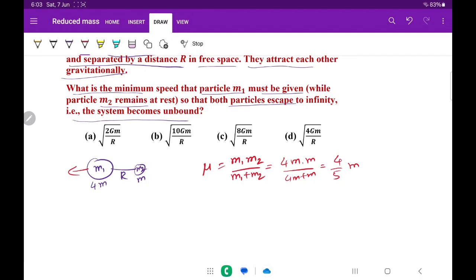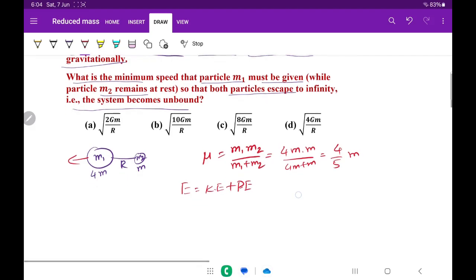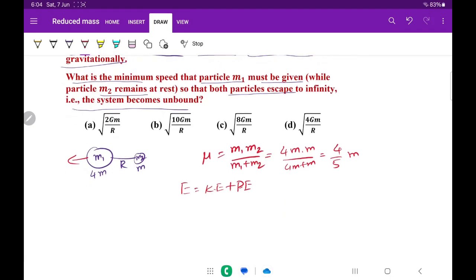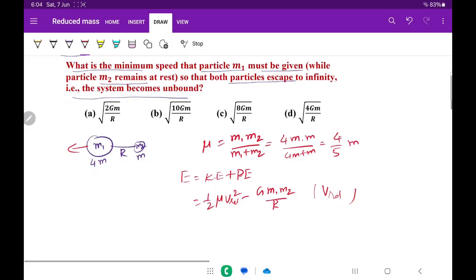What is the total energy of the system? Total energy is kinetic energy plus potential energy, which can be given as half mu v-relative squared minus G m1 m2 divided by r. Why did I write v-relative? Because one particle is at rest and the other is moving, so we will consider relative velocity and mu is reduced mass here.